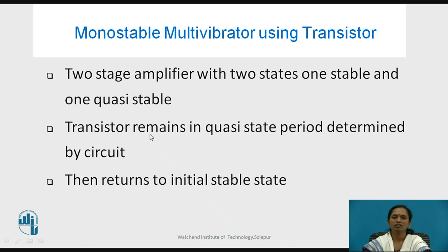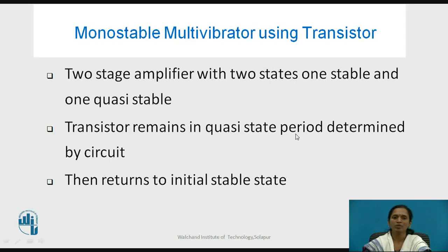This is obtained by a transistor, and the transistor remains in the quasi-stable state. The time period is determined by the circuit elements, and it again returns to its initial stable state — nothing but logic 0. The quasi-stable state time period is determined by the resistor and capacitor connected at the base of the transistor. We have two transistors, and the R and C connected to the base of the output transistor will decide the time period of the monostable multivibrator's quasi-stable state.